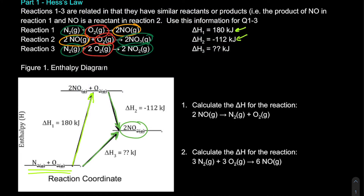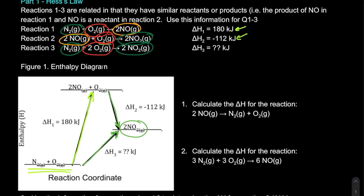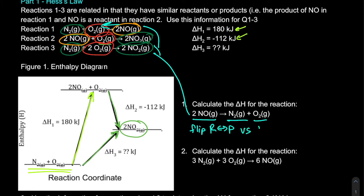Let's calculate the enthalpy change for the reaction 2NO → N2 + O2. We notice this is effectively the reverse of reaction 1 — we've flipped our reactants and products. Now we're starting up at NO and going down to N2 and O2, so the enthalpy change should be negative. The magnitude is the same, 180 kJ, so our enthalpy change is negative 180 kJ.